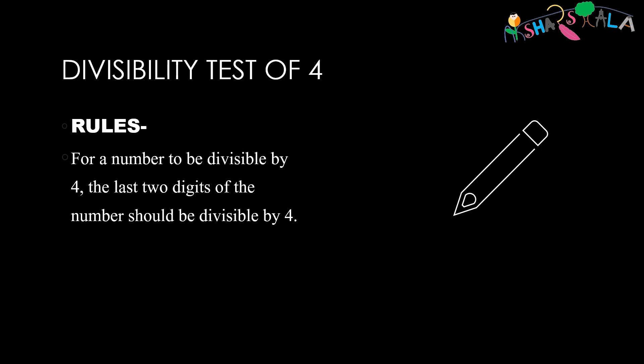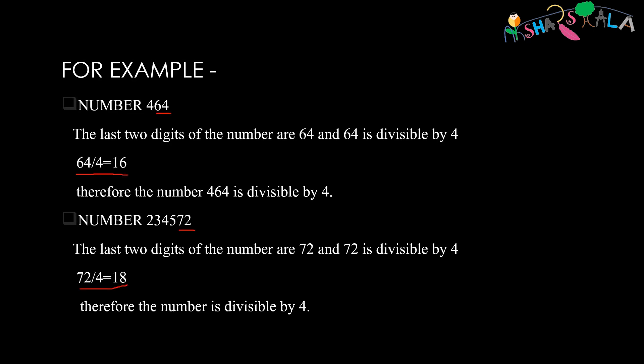Heading on to the divisibility test of 4. The rule says that for a number to be divisible by 4, the last two digits of the number should be divisible by 4. For example, we take a number 464. The last two digits of the number are 64 and 64 is 16 times divisible by 4. Therefore, we can say that the number 464 is divisible by 4.